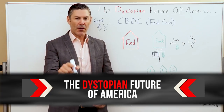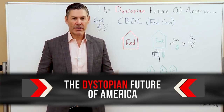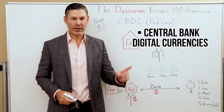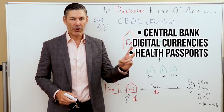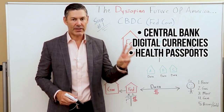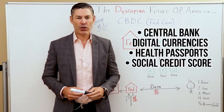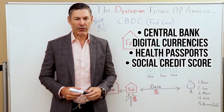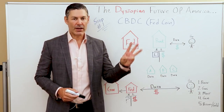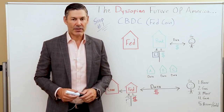The dystopian future of America: central bank digital currencies, health passports, and how this all plays into a social credit score. I'm going to explain this to you in three simple, fast steps.